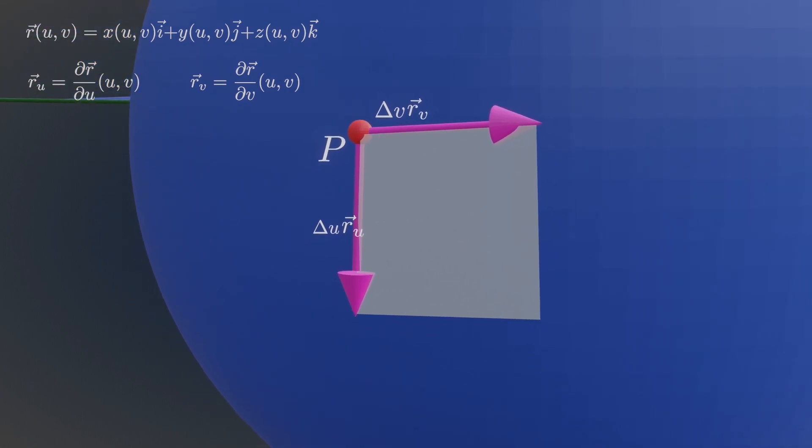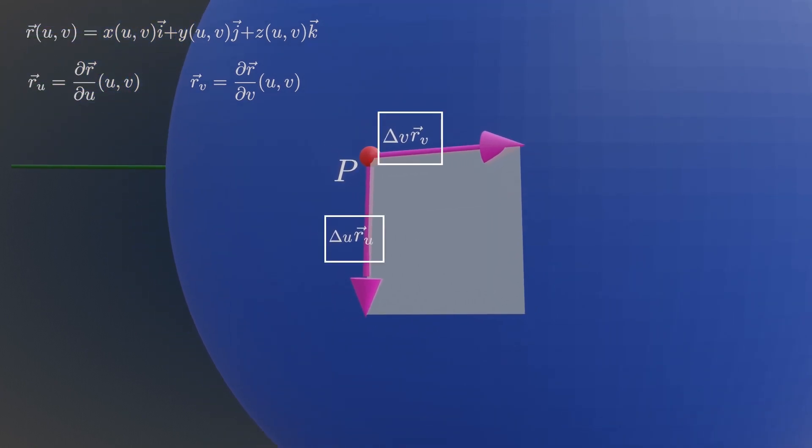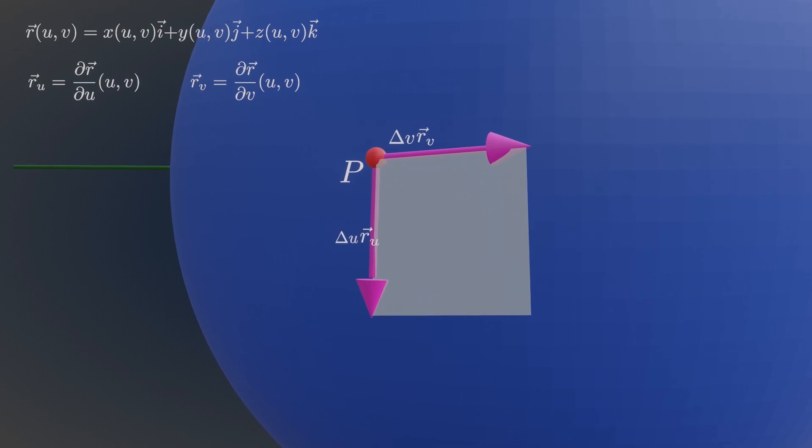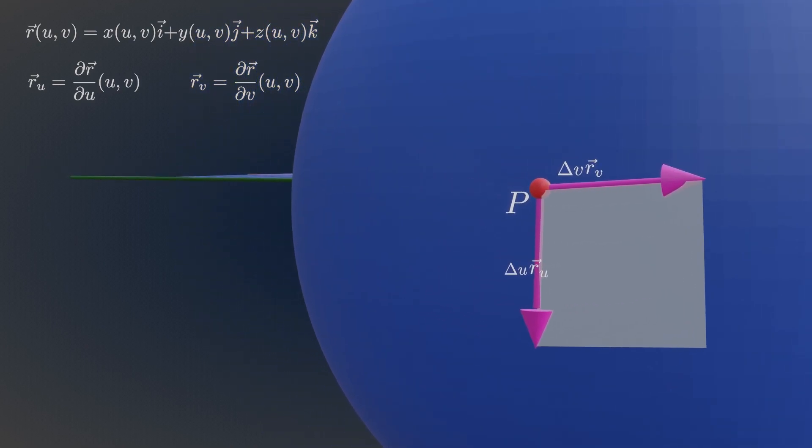Now take the cross product of these two vectors. What will you get? The cross product of these two vectors is another vector perpendicular to this plane.